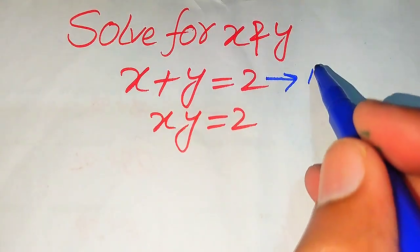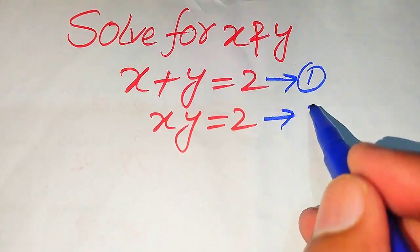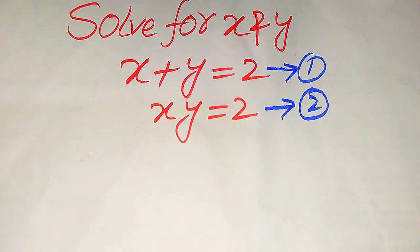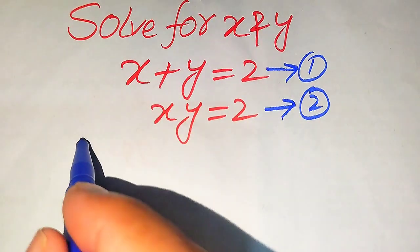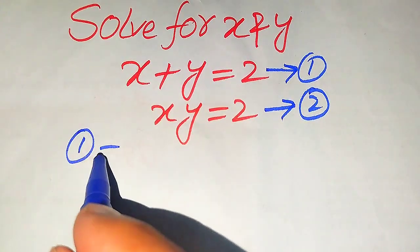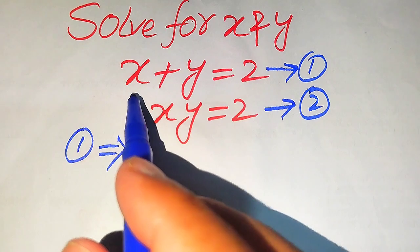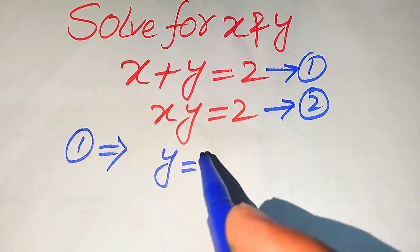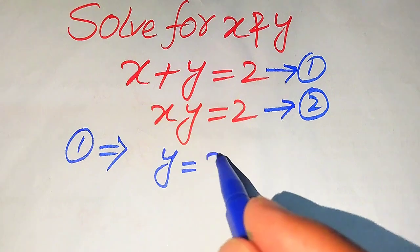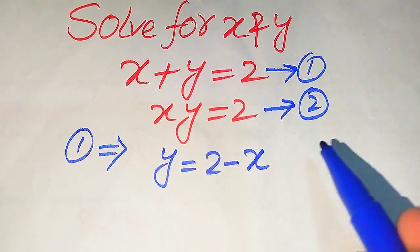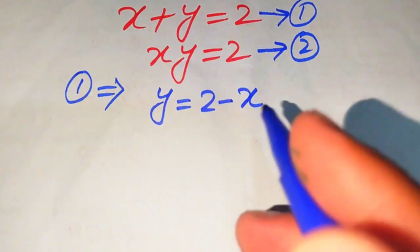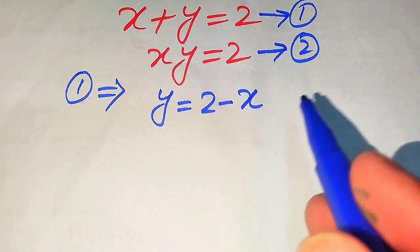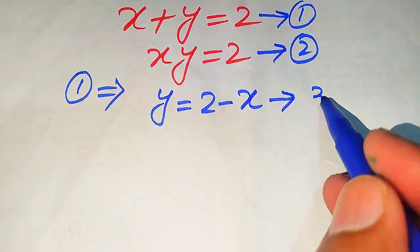Here, we call this equation number 1 and this equation number 2. In order to find the values of x and y, we first focus on equation number 1. Equation number 1 implies that when we move plus x to the right hand side it becomes minus x, so we get y equals 2 minus x. We call this equation number 3.